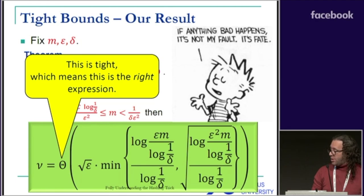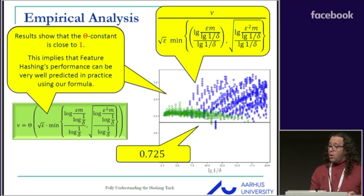What perhaps is missing from the theory is the constant hiding within this theta. We accompany our theory with experimental results that show that actually this constant is very close to one, meaning that this formula very well predicts the performance of feature hashing in practice.